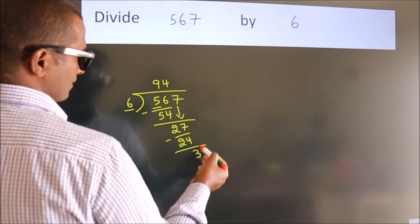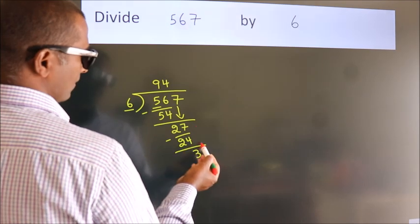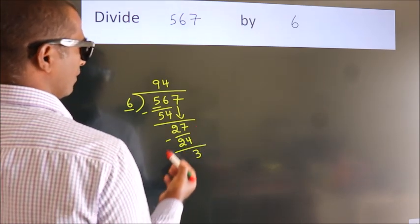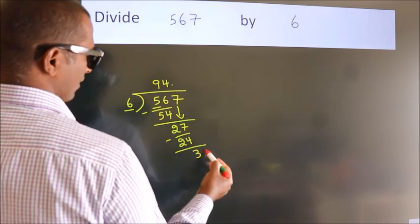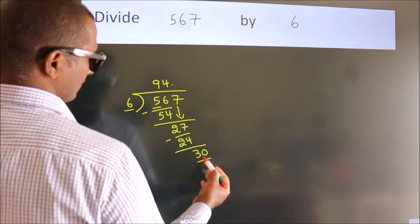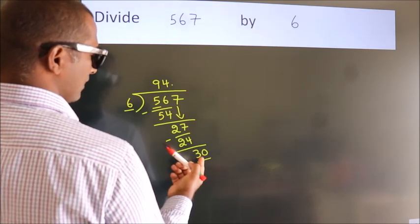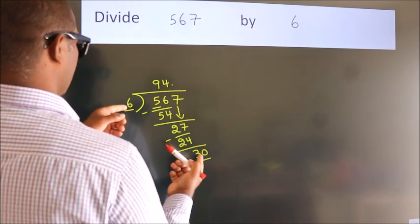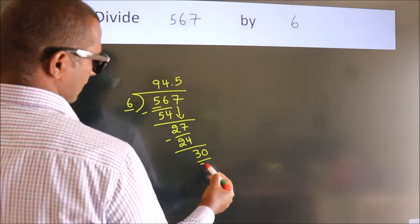After this, no more numbers to bring down. So what we do is, we put a dot and take 0. So, 30. When do we get 30? In the 6 table, 6 fives are 30.